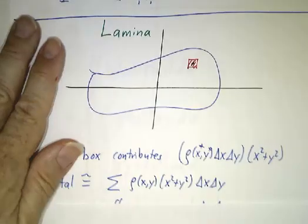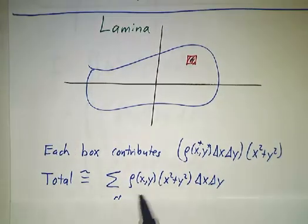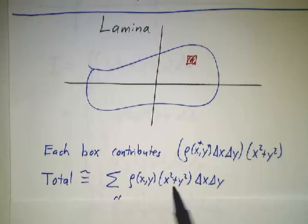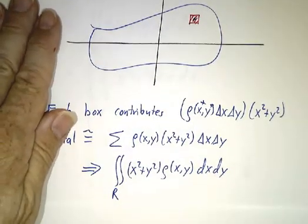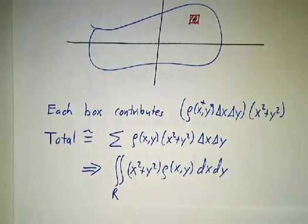And so the total moment of inertia is going to be the add up of all the boxes. Density times x² + y² times Δx Δy. And the limit of a sum as you chop things finer and finer is an integral. So the moment of inertia is given by integrating (x² + y²) times the density with respect to area over your lamina.